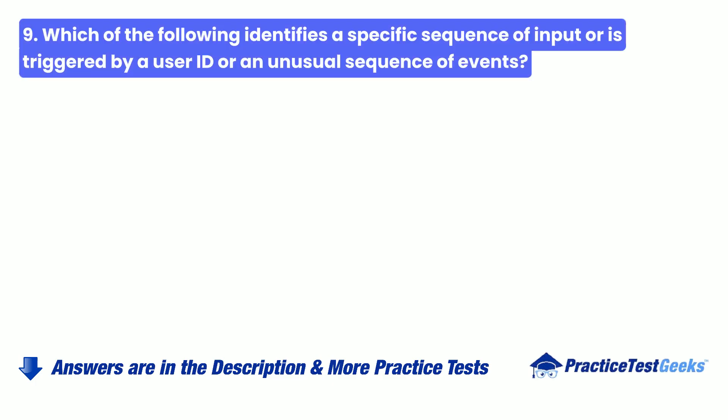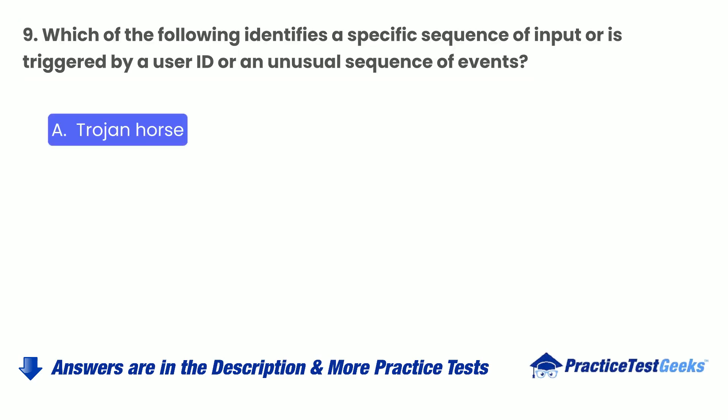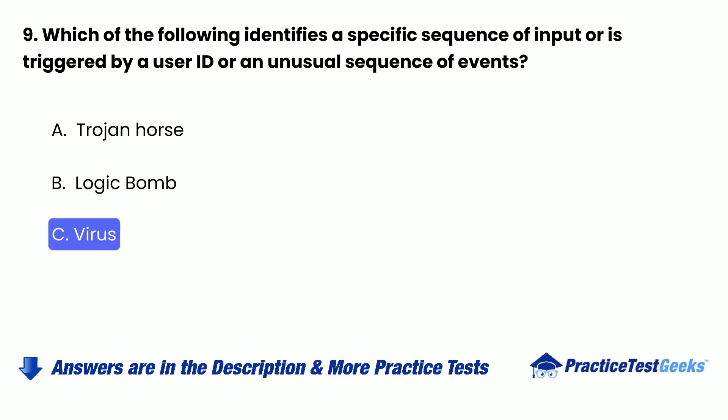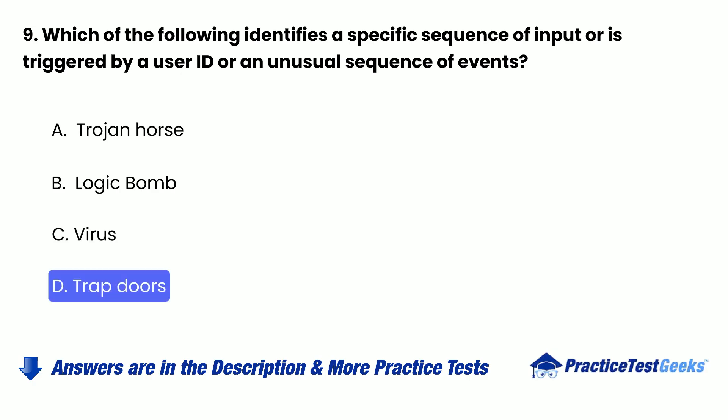Question 9: Which of the following identifies a specific sequence of input or is triggered by a user ID or an unusual sequence of events? a. Trojan Horse. b. Logic Bomb. c. (option c omitted in transcript). d. Trapdoors.